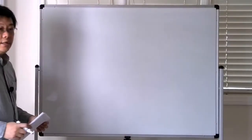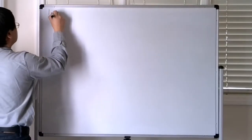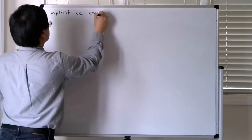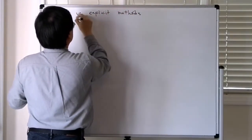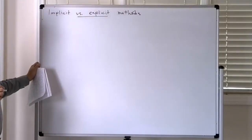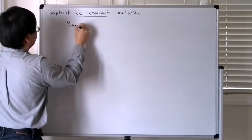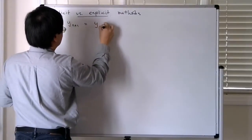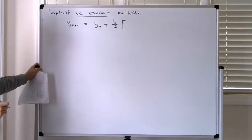We're going to say a little bit about the issue of implicit versus explicit methods. Let's try to illustrate this in the context of the trapezoidal rule, which we were discussing. You have a numerical method which says that the solution at the new time is equal to the solution at the old time plus the trapezoidal approximation of the integral of the vector field along a solution curve.